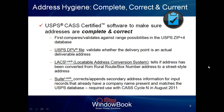LAX Link is now a required portion of your address hygiene step. The last thing — which became required back in August of last year with CAS Cycle N — was SuiteLink. It's a step where you take address records that have business addresses and bump them against the company database from the Postal Service to see if you can correct or append the secondary address information for those input records.